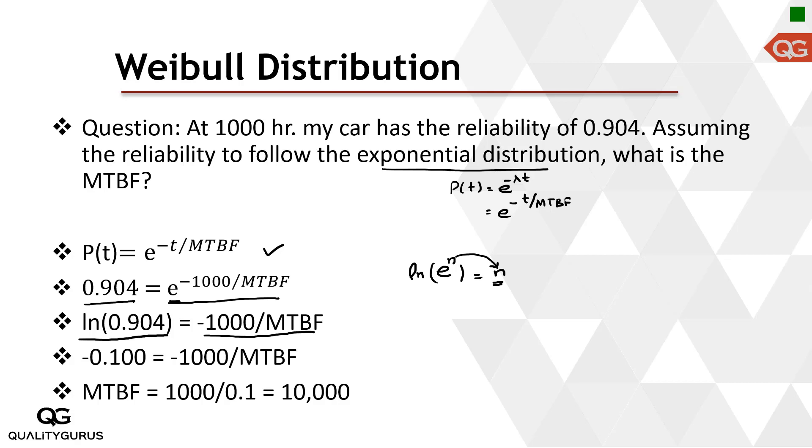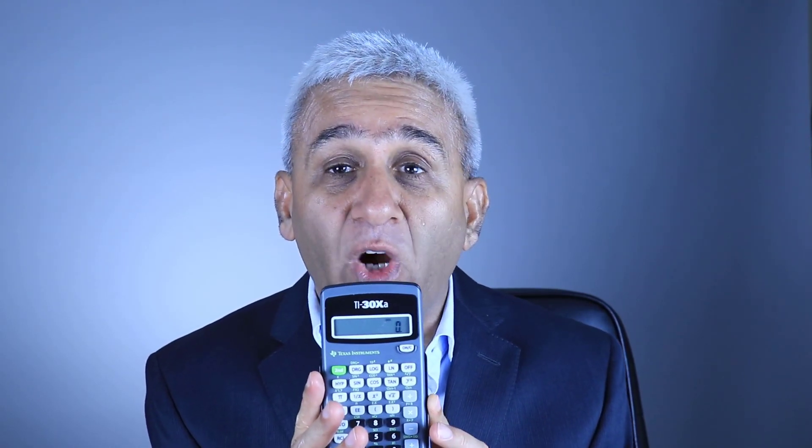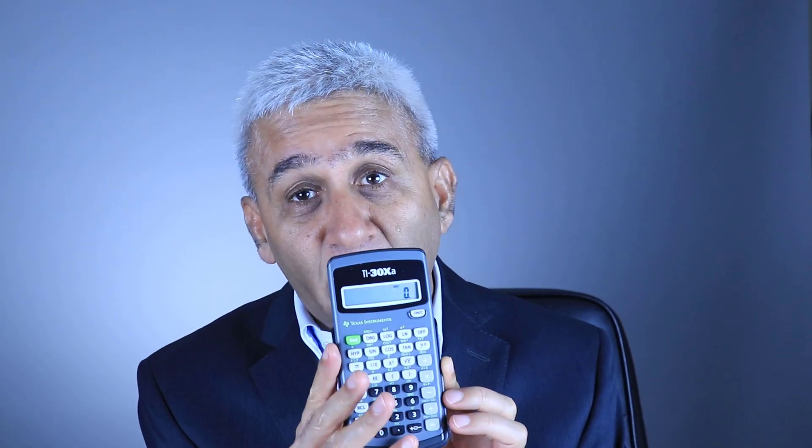Now we need to find out this natural log, ln 0.904. How do we find this out? For that we will be using calculator. Let me use my calculator. Here I want to find out the natural log of 0.904. Let me first type 0.904.